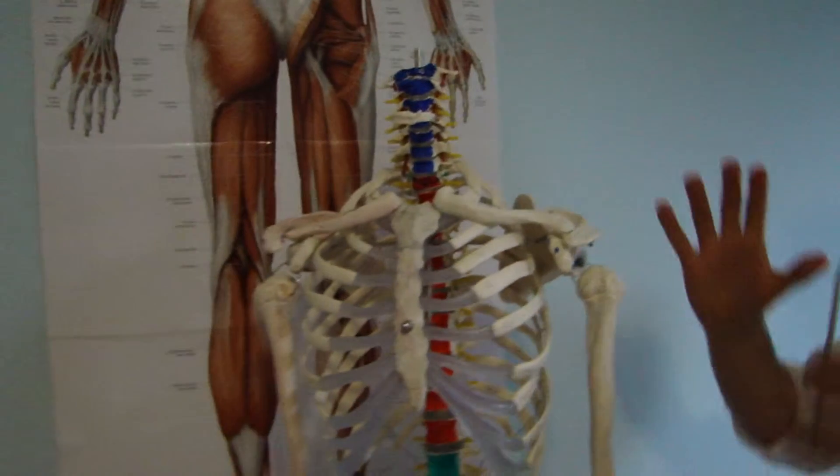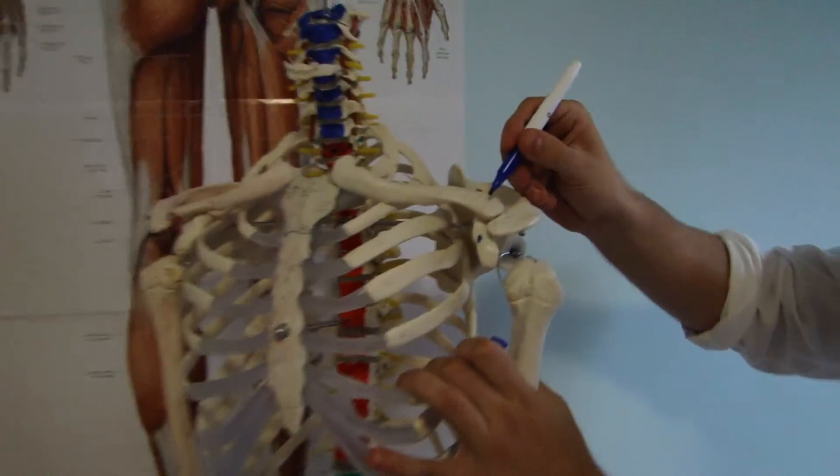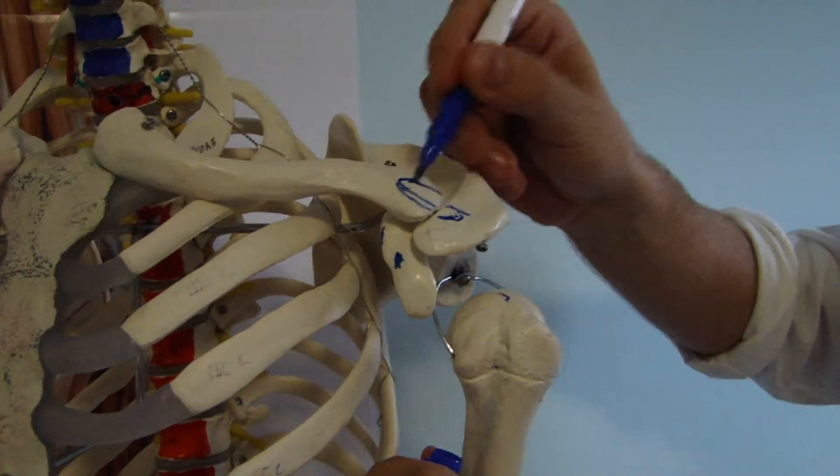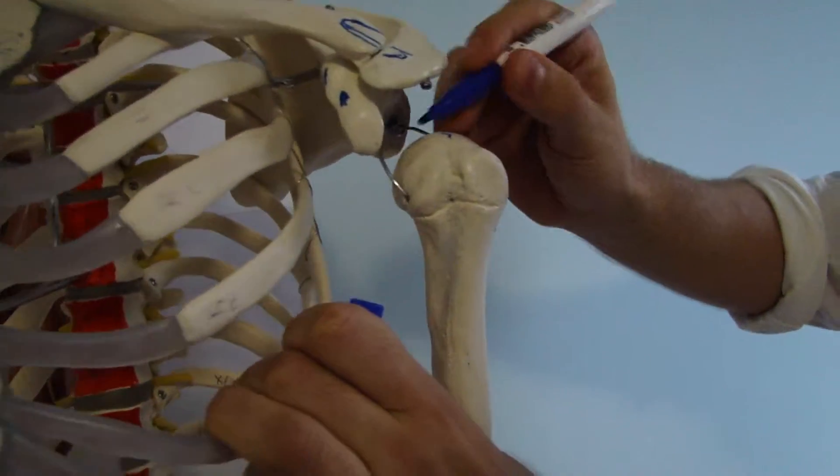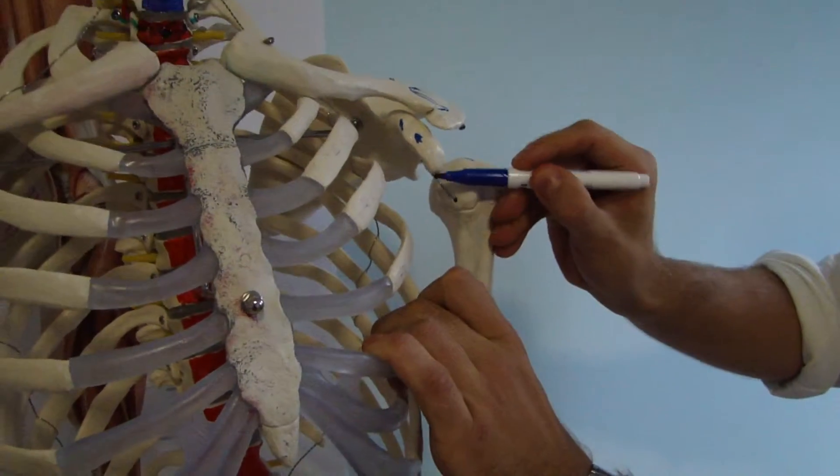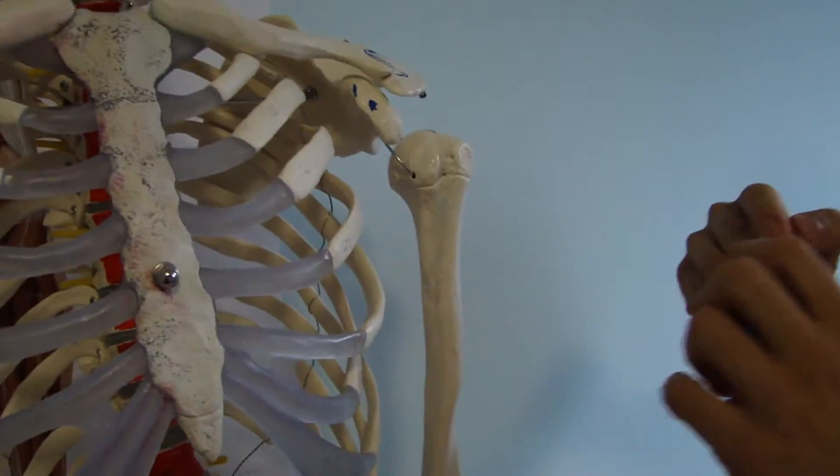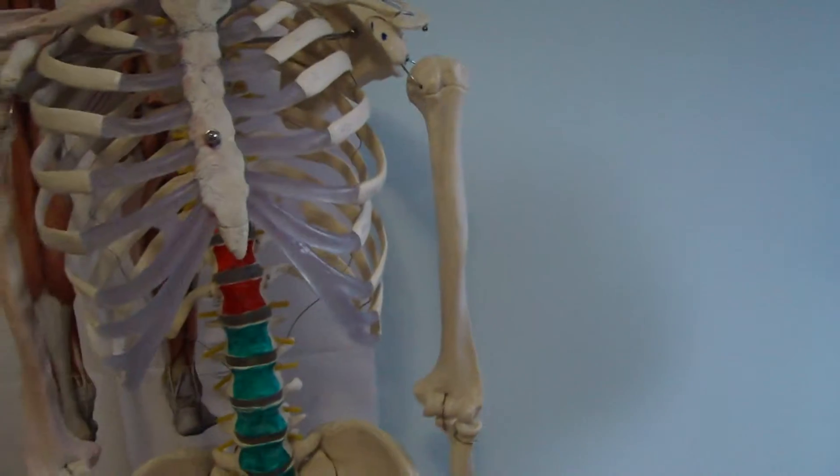And now let's focus on bursae. Here we have quite big subcutaneous acromial bursa. Underneath we have subacromial bursa. Here we have coracoid bursa and here we have intertubercular tendon sheath as well.